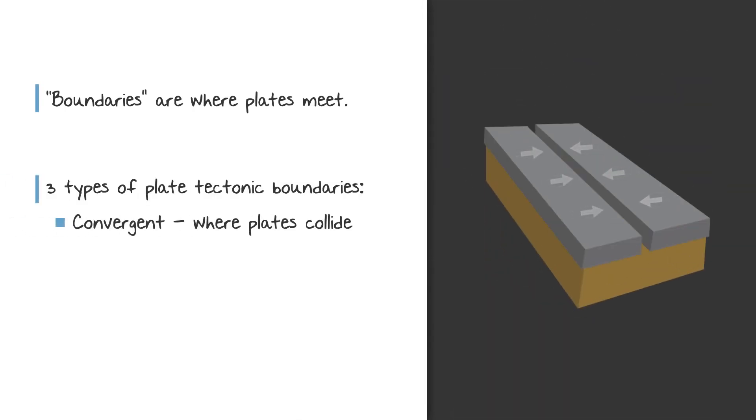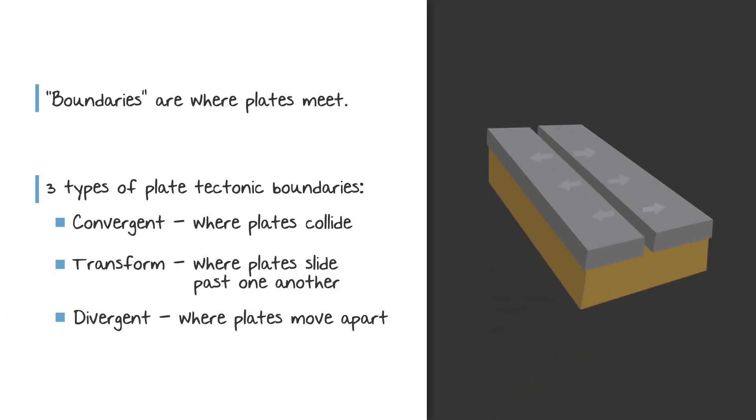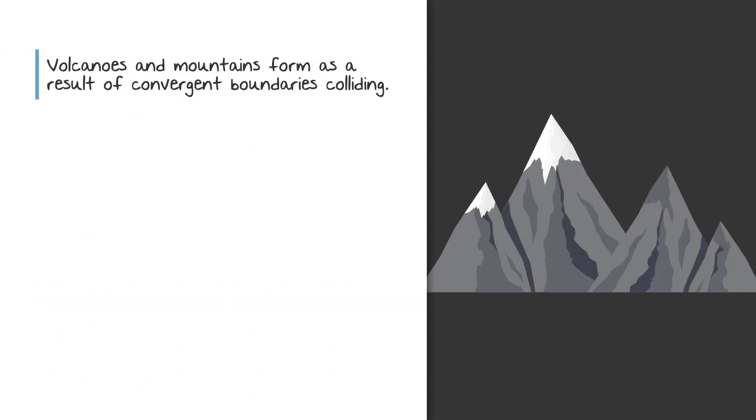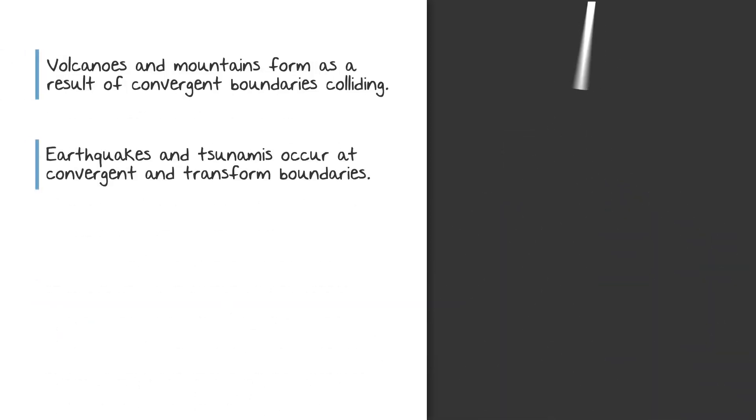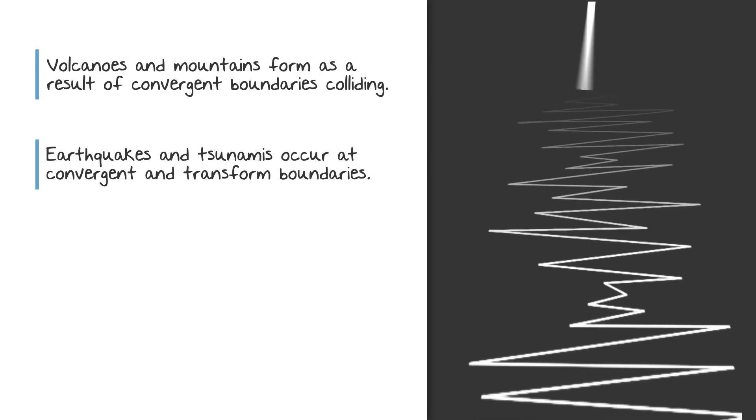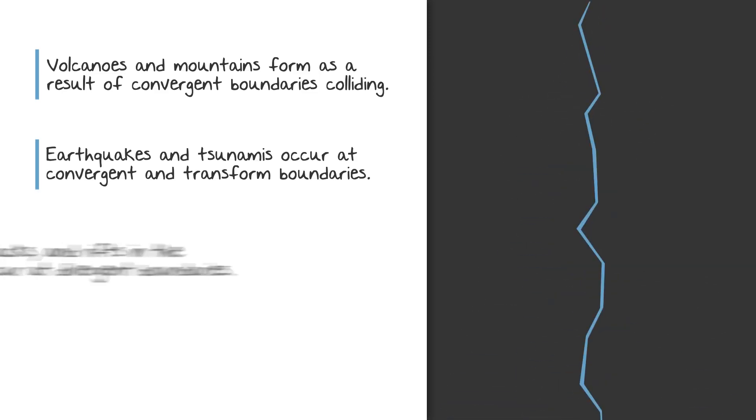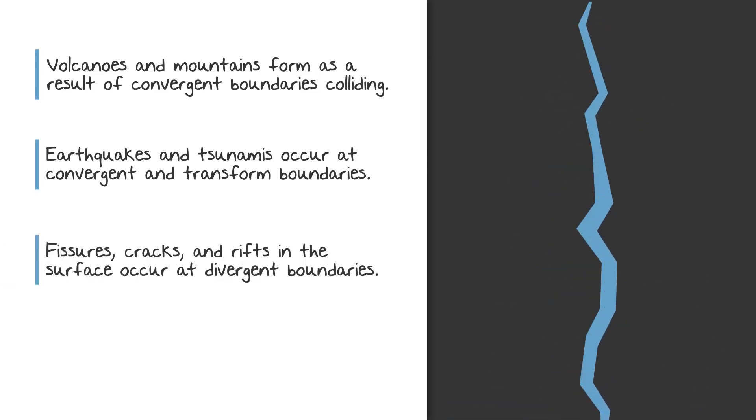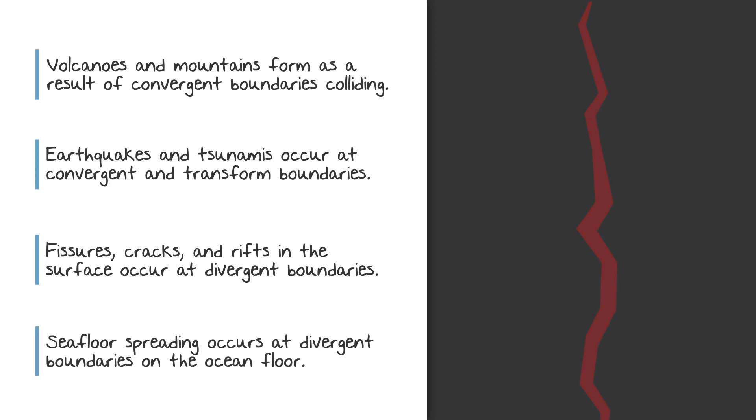Convergent boundaries, where plates collide. Transform boundaries, where plates slide past one another. And divergent boundaries, where they move apart. Volcanoes and mountains form at convergent boundaries. Earthquakes and tsunamis can occur at both convergent and transform boundaries. Fissures and large cracks in the surface occur when two plates move apart at a divergent boundary. And seafloor spreading occurs at divergent boundaries located at the ocean floor.